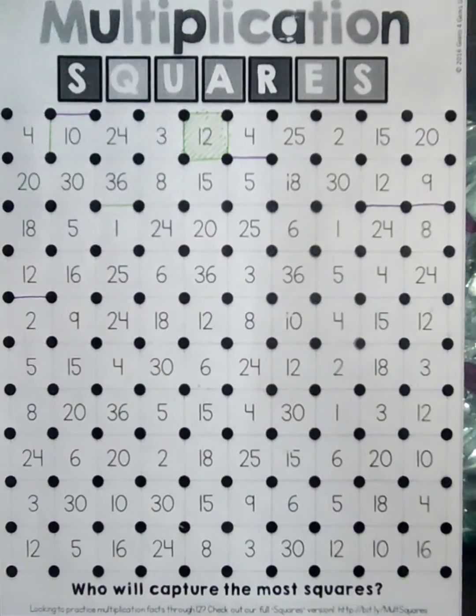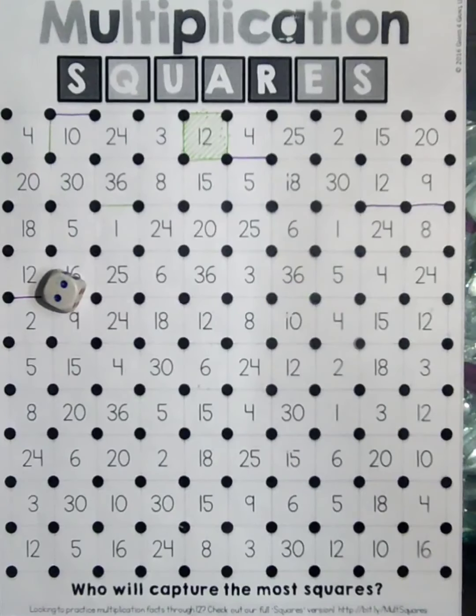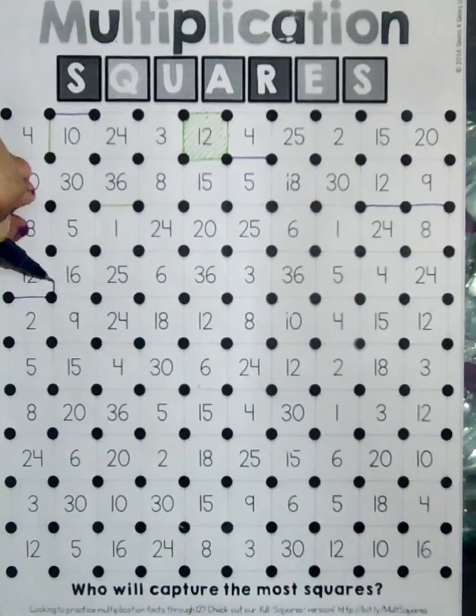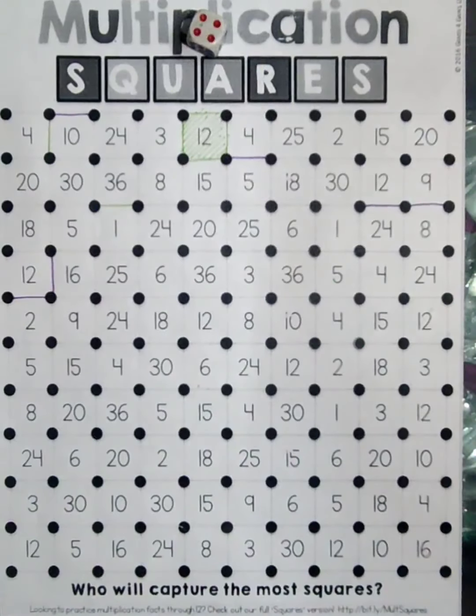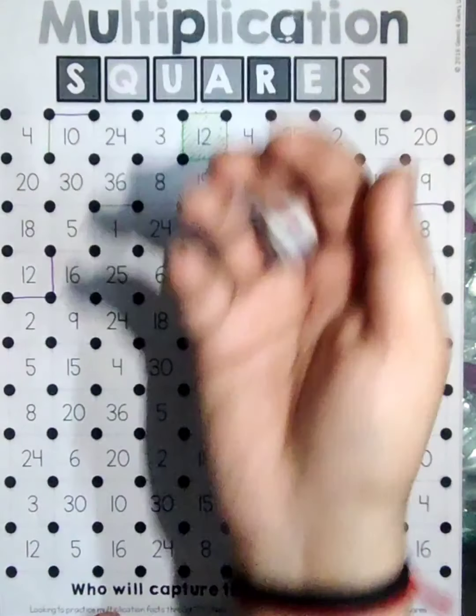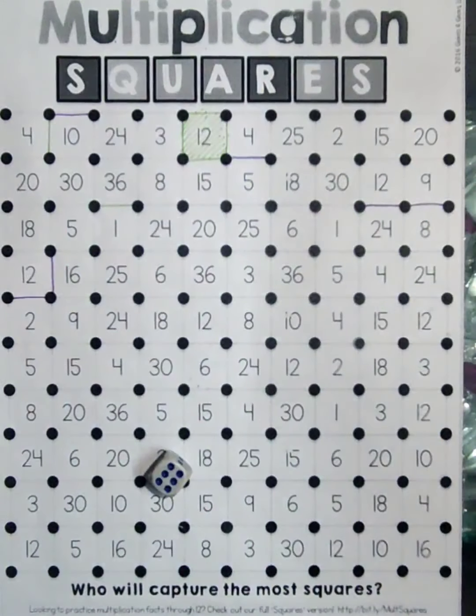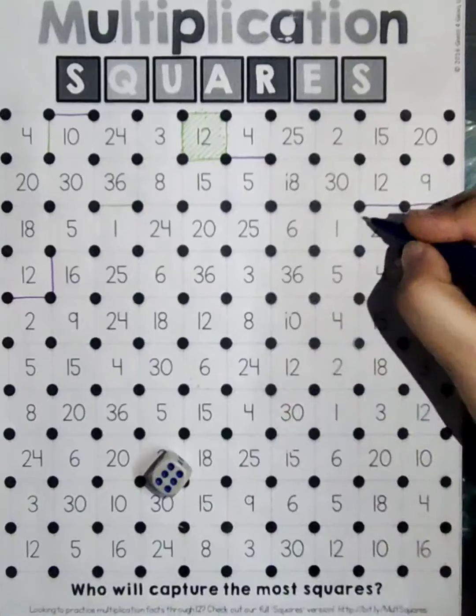I got six and then two. Six times two is twelve, so again a new box with twelve will start. Now it's four and then six. Six times four is twenty-four, so again I can draw my line here.